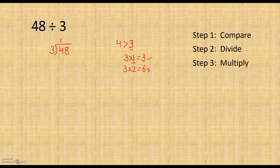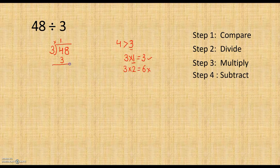In step 3, we multiply. We multiply the quotient with the divisor — so 3 times 1 is 3, and we write 3 below. Then we go to step 4. In step 4, we subtract — so here we subtract 4 minus 3, which equals 1.